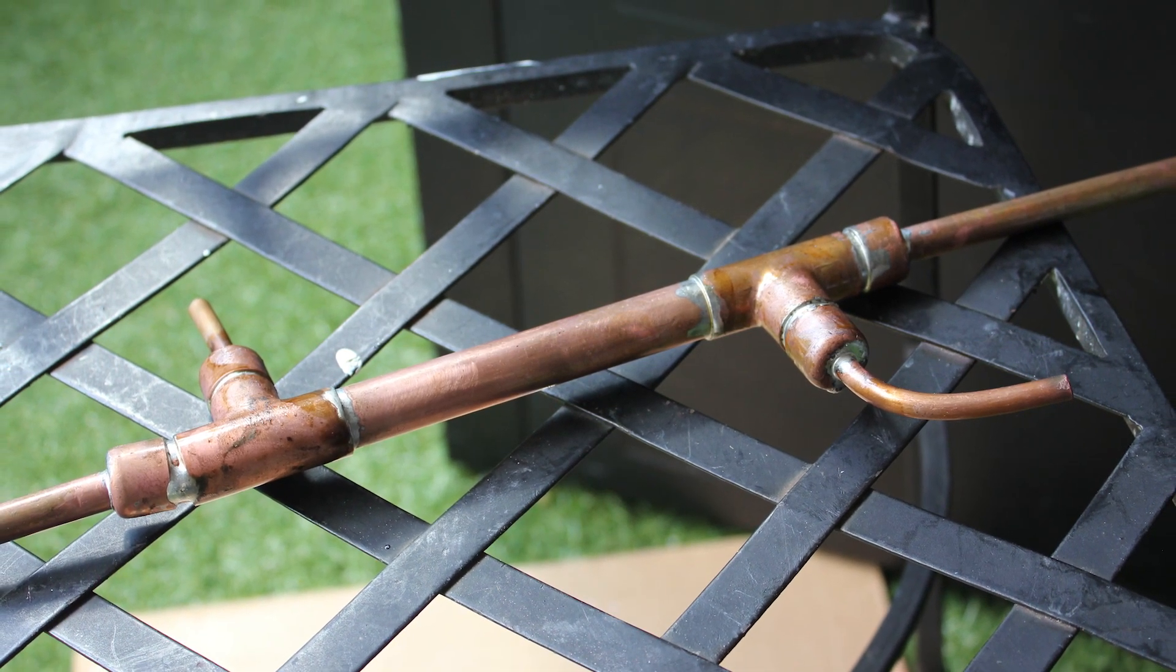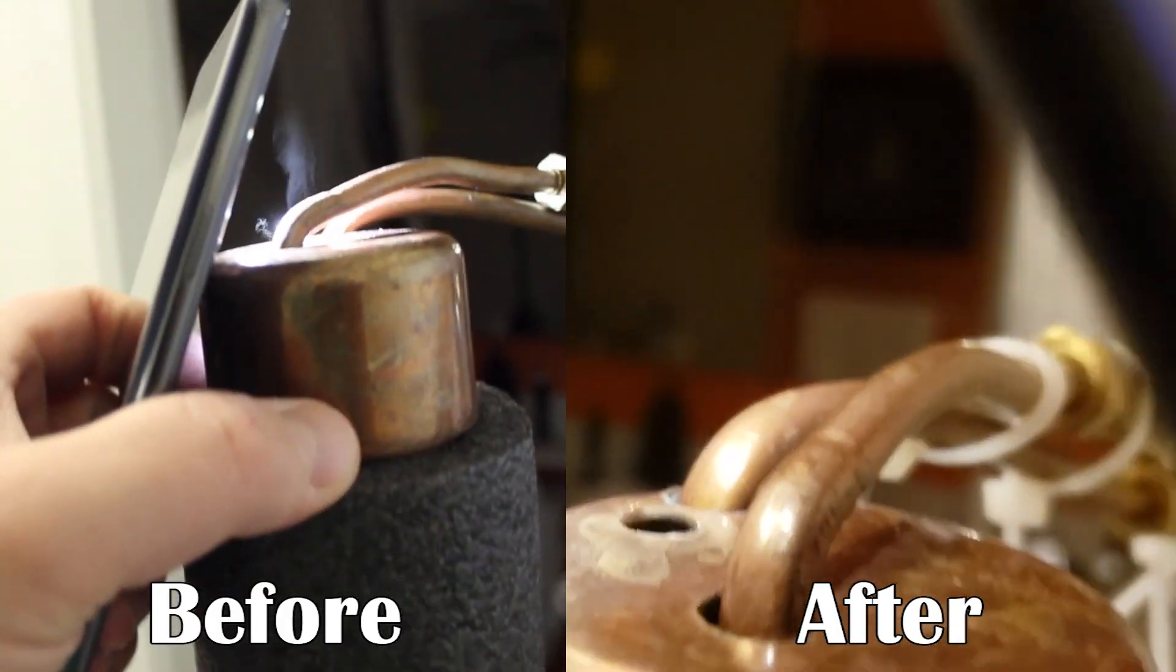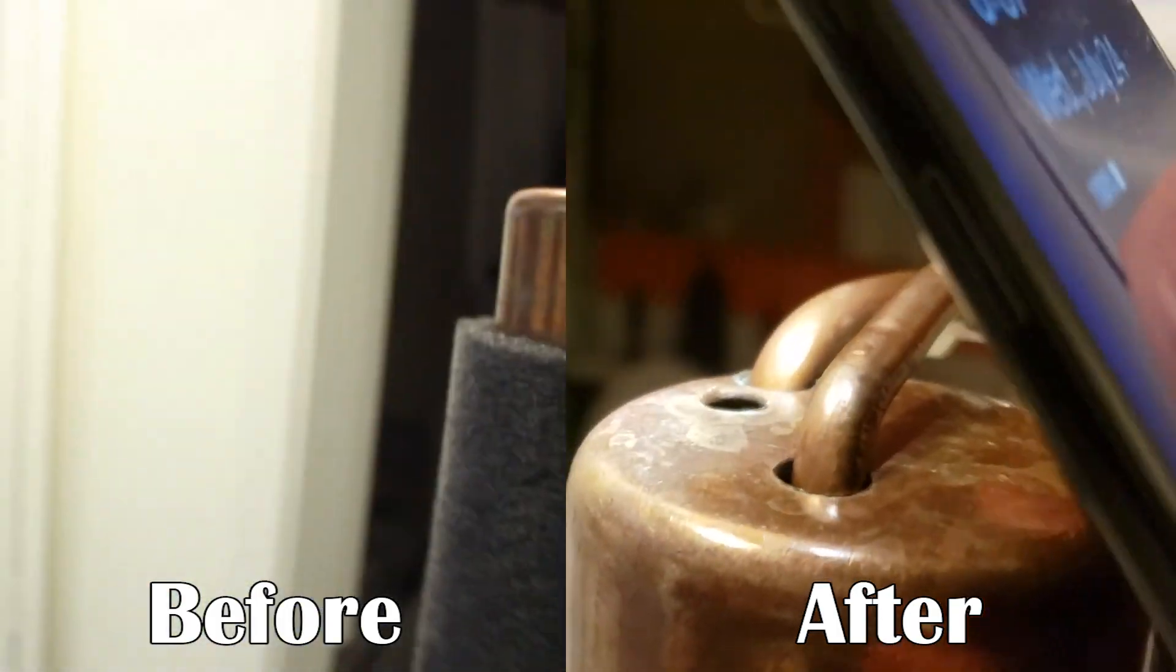This is the second video in a two-part stripping run series. In the first video, we solved the issue of little tiny puffs of vapor escaping past my condensing coil.